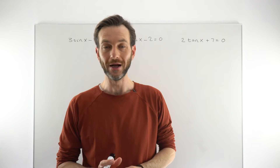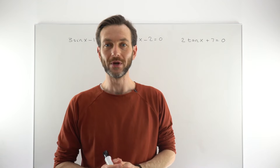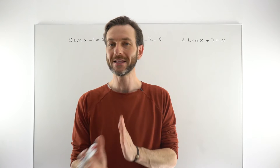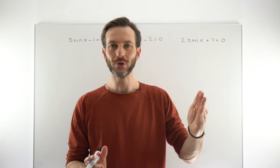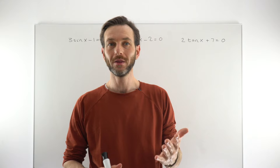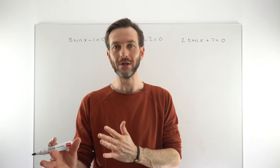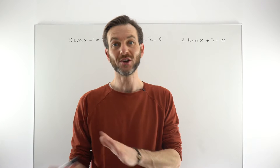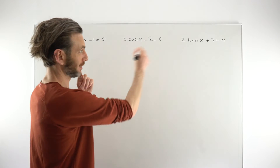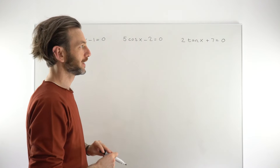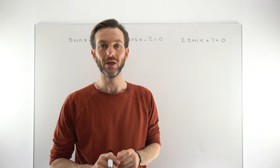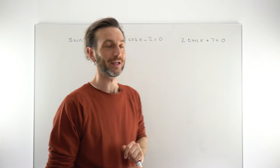Radians are just another way of measuring angles. If you're not familiar with radians, that's fine — this class is going to be in degrees. But any time you're doing trigonometry, you've always got to remember and check which of these four options you're dealing with. We're working in degrees and in calculator mode, which is probably the easiest scenario.